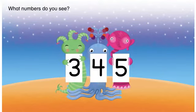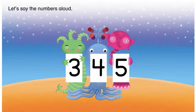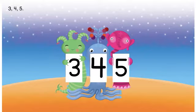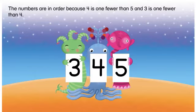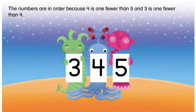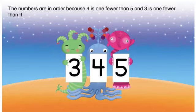What numbers do you see? Let's say the numbers aloud: three, four, five. Are the numbers in order? The numbers are in order because four is one fewer than five, and three is one fewer than four.